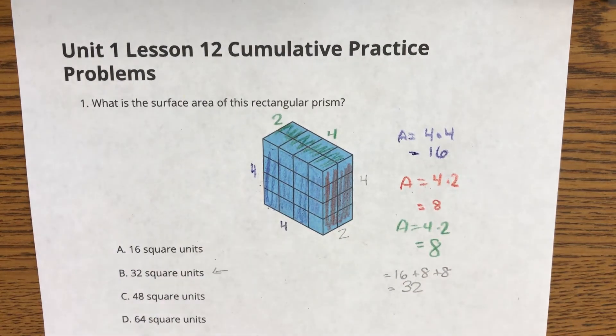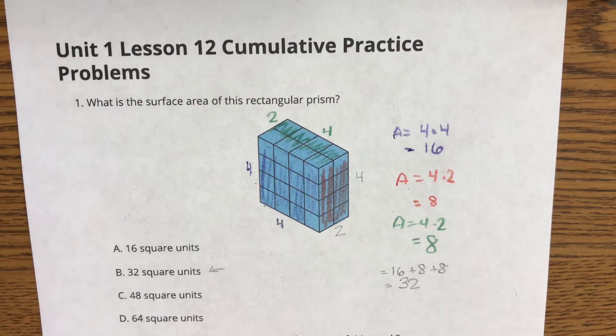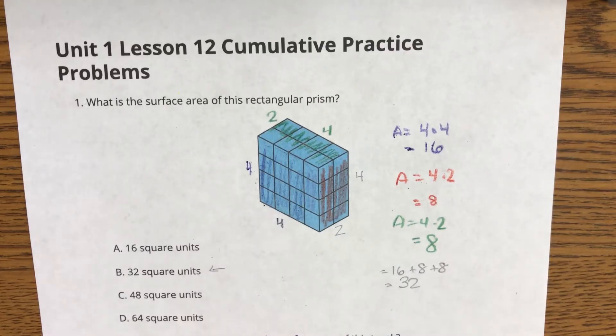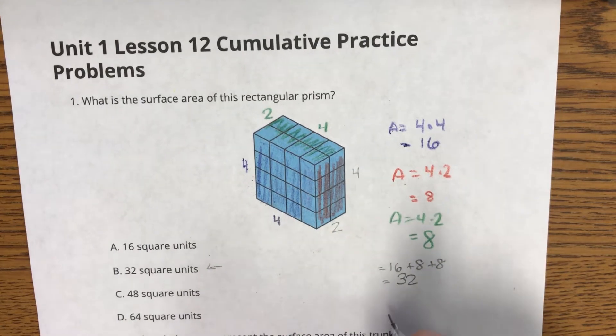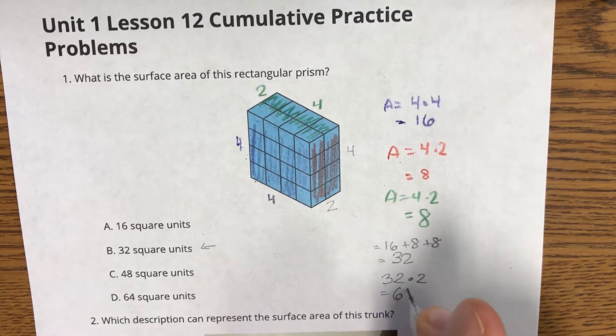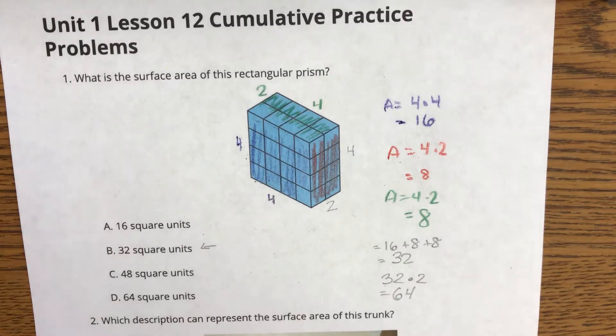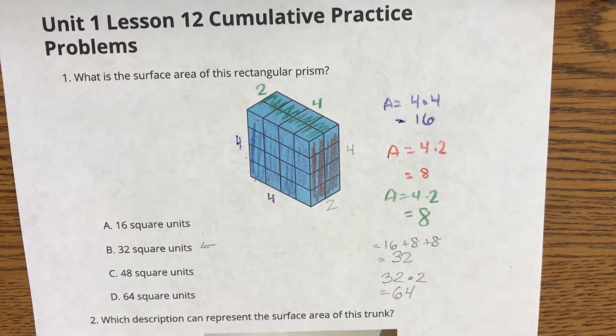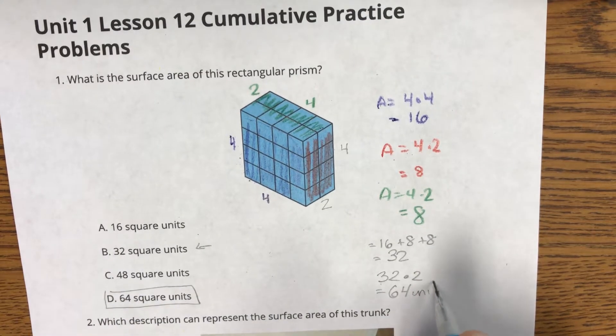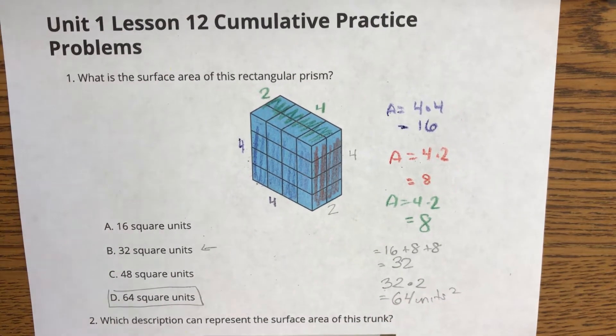And hey look, B says 32 is an answer. But B is not our answer. There are six faces of this rectangular prism. Three of them are hidden that you can't see. So what we really need to do to finish this question now is to take 32 times 2 to get 64 to account for the half of the rectangular prism that we cannot see. And so D, 64 square units, is our solution to question number one.